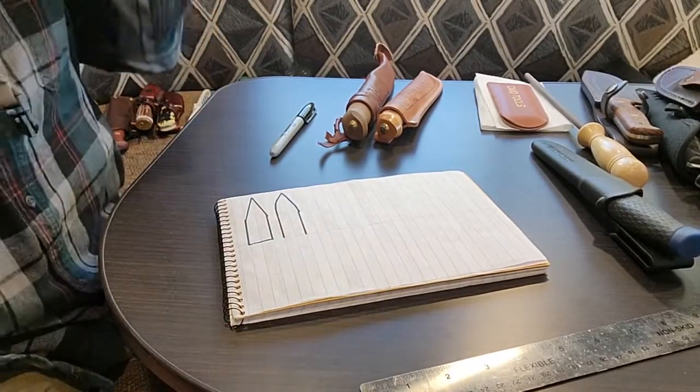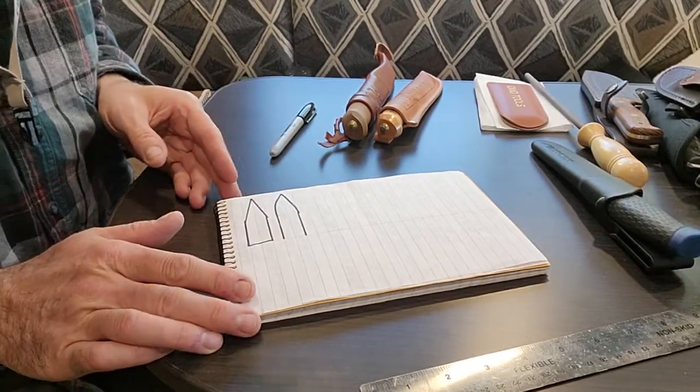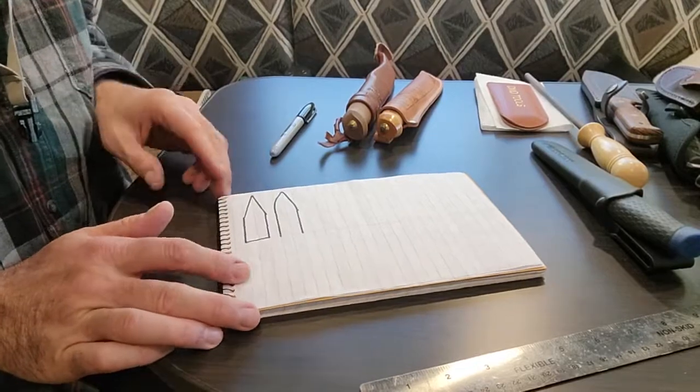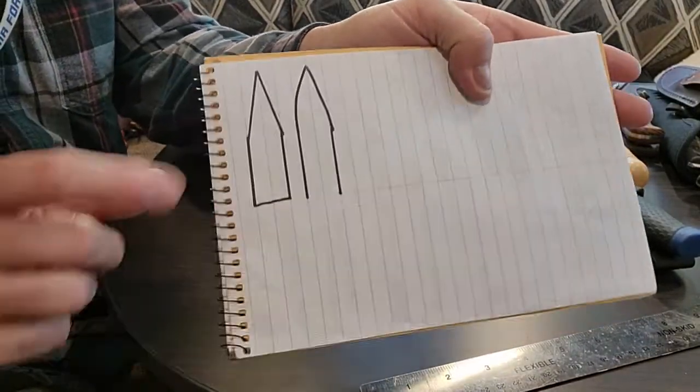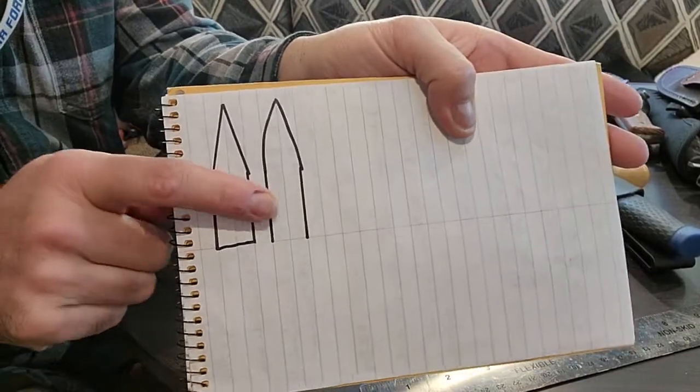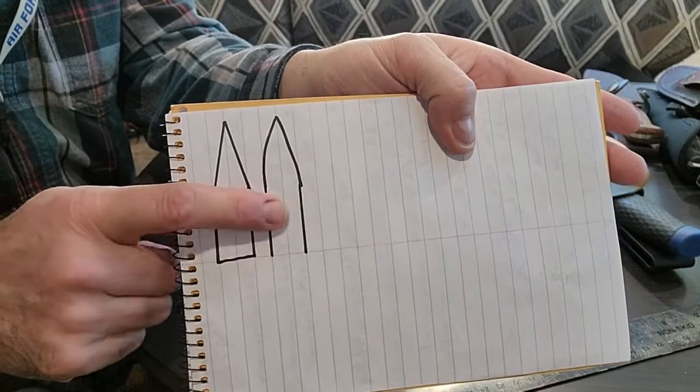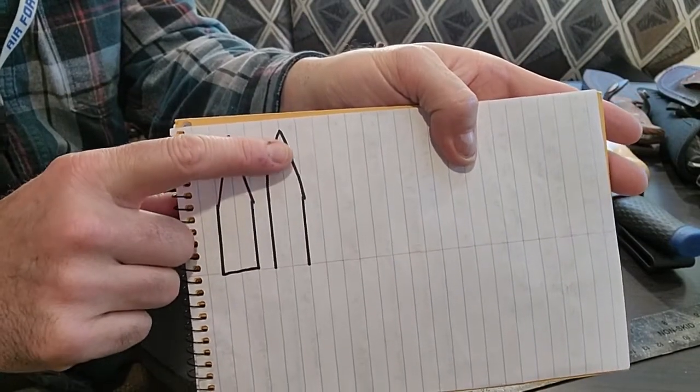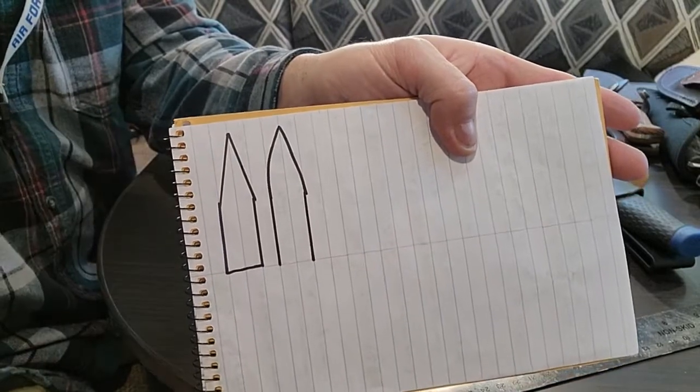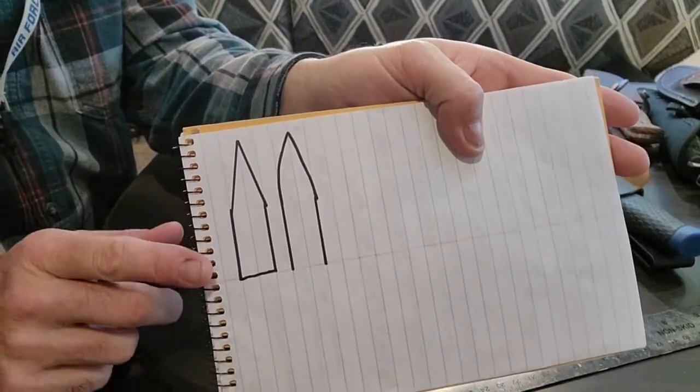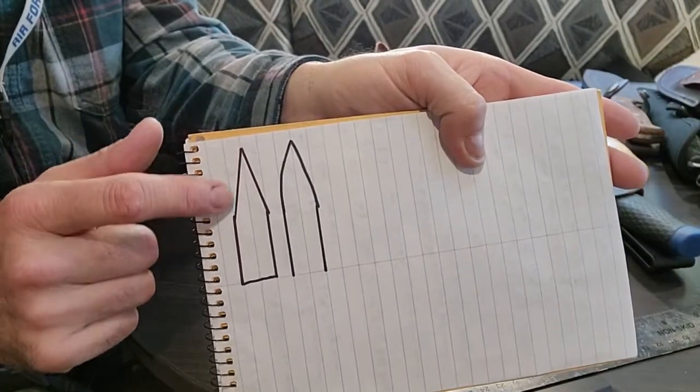I'm going to try to keep it simple, but some of the two best grinds for making feather sticks I think are the Scandi grind, which is this first one, and a convex grind. Now this is the flat of the knife and then here's the grind or the edge.